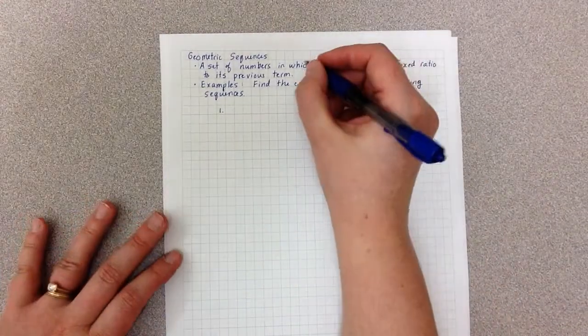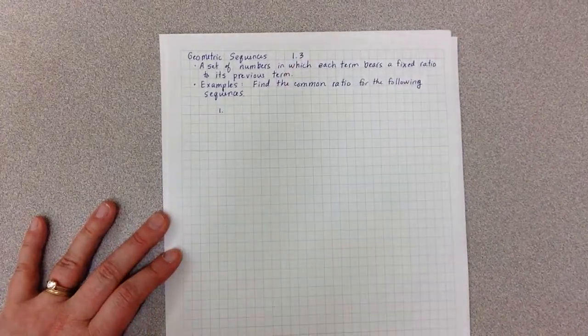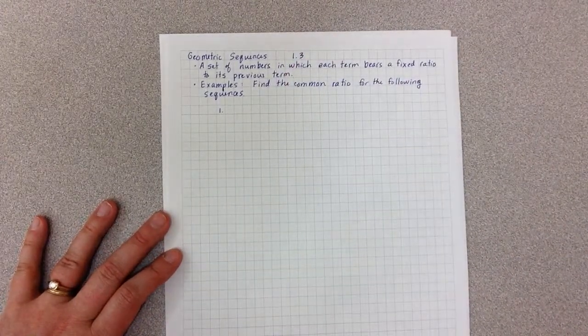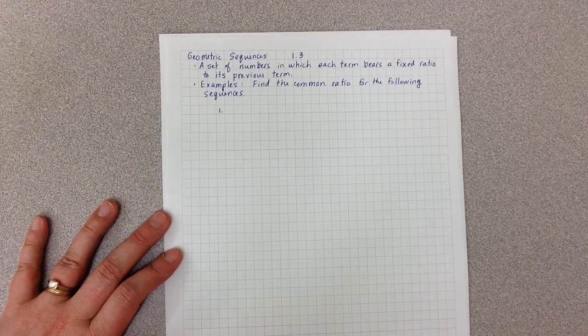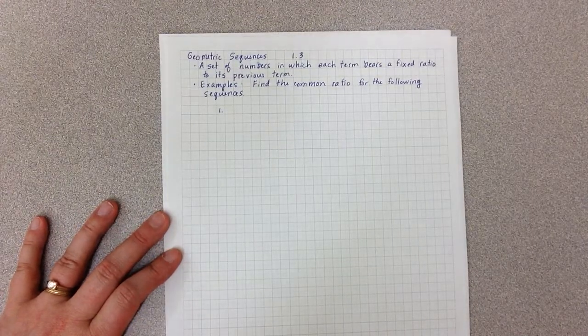These notes are on geometric sequences from section 1.3. Geometric sequences are a set of numbers in which each term bears a fixed ratio to its previous term.